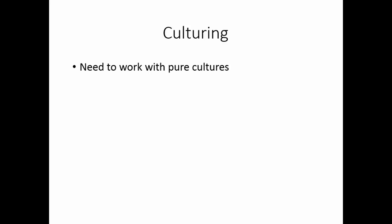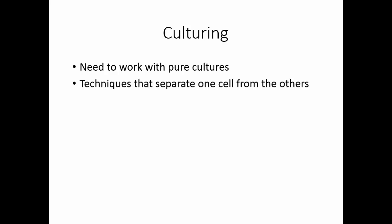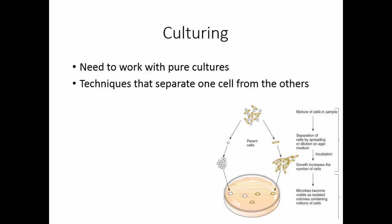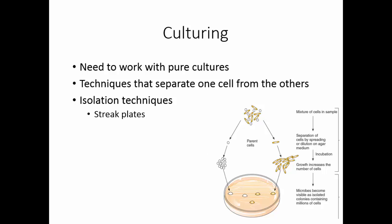We have a need to work with pure cultures, so we need to use techniques that separate one cell from all of the others. We take our basic specimen and want to make sure we can separate all the cells out to get isolated colonies of everything. There are basically three isolation techniques used in the clinical laboratory: streak plates, pour plates, or spread plates.